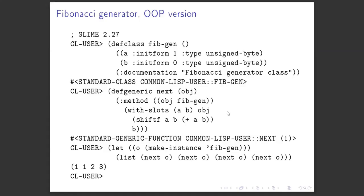Here's the similar version in object-oriented style, where there is clearly more text. The base class has the same setting of A and B. I define a generic function which dispatches on an object of that type and gives another step in the Fibonacci sequence — using the shift function instead of parallel set, but the effect is basically the same. This also becomes a generator, which we will return to in the next talk.